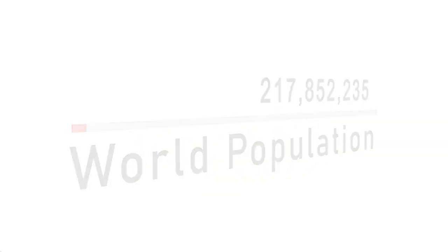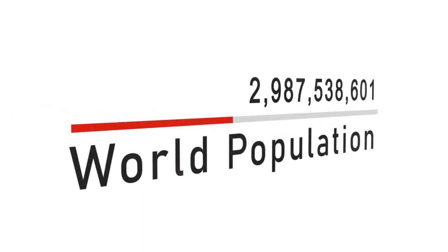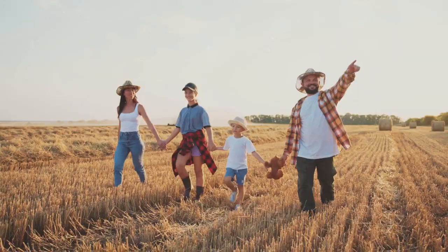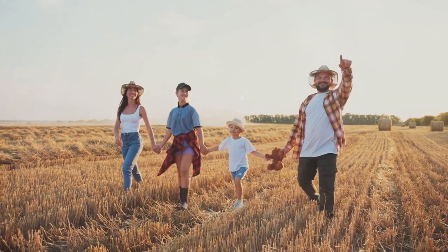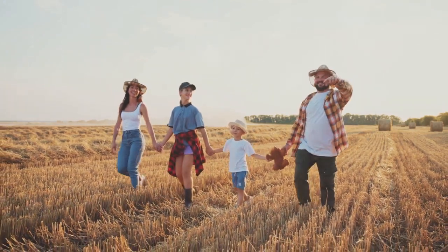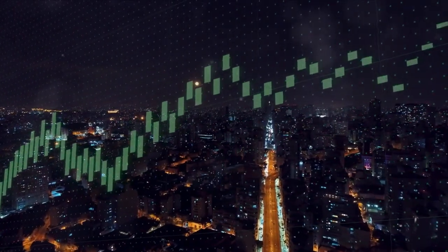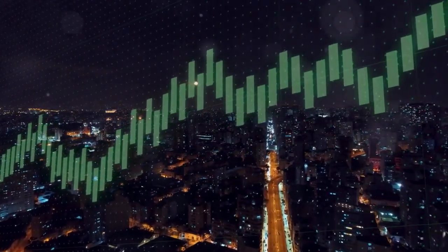But what does this mean for the future? According to the United Nations, the world population is projected to reach 8 billion by 2024 — that's just one year away. By mid-century, the population could potentially reach 9.5 billion. By the end of the century, we could be looking at a world populated by over 11 billion people.